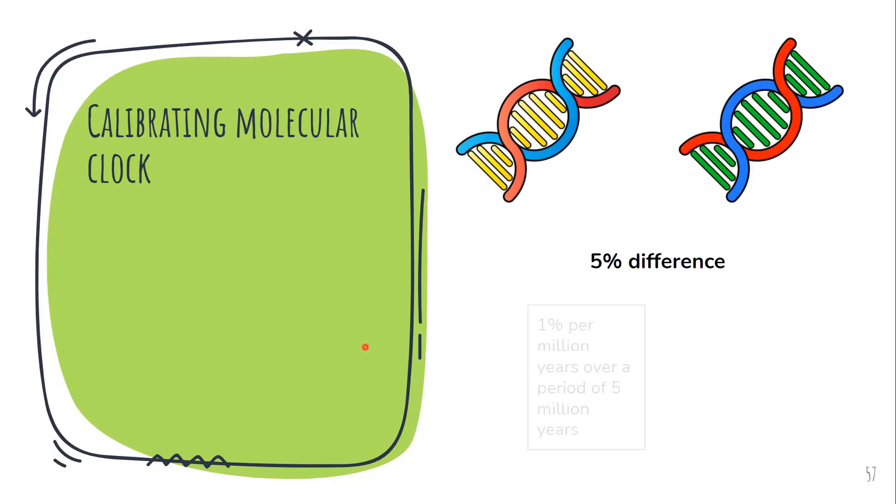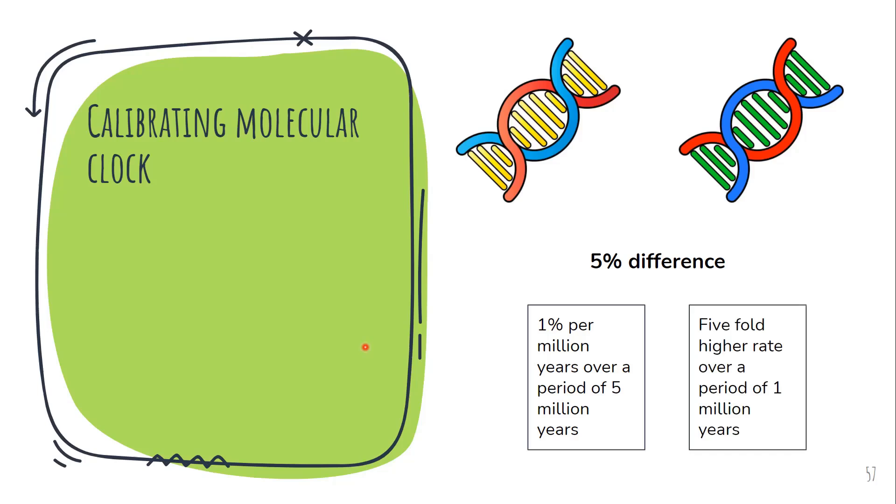They had a common ancestor and now they have diverged and there is only a 5% difference. Now there are two options. One, either this difference arose with 1% change per million year over a period of 5 million years. So that is one possibility. Or second possibility is it underwent a 5 fold higher rate of mutation in a million years.